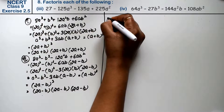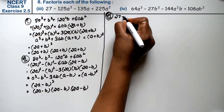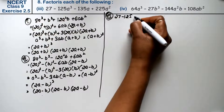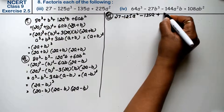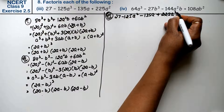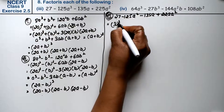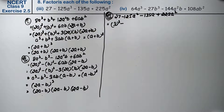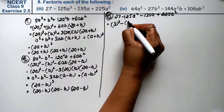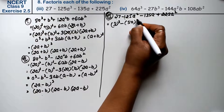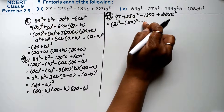Let's do the third part. Third part is: 27 minus 125a cube minus 135a plus 225a square. Now see — this is the cube of 3, right? You need to remember cubes at least up to 9. And this is the cube of 5a.